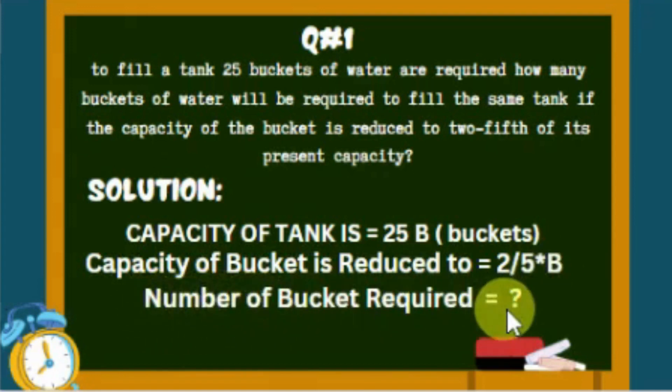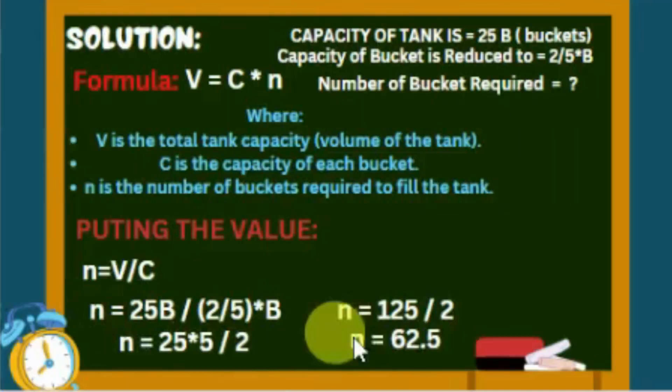According to the question, we need to consider the fundamental relationship between capacity, volume, and the number of items, in this case buckets. The fundamental relationship is V equals C times n, where V is the total tank capacity or volume of the tank, C is the capacity of each bucket, and n is the number of buckets required to fill the tank.